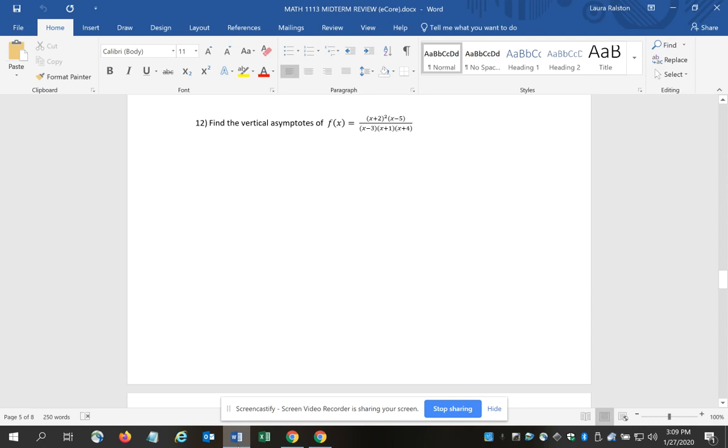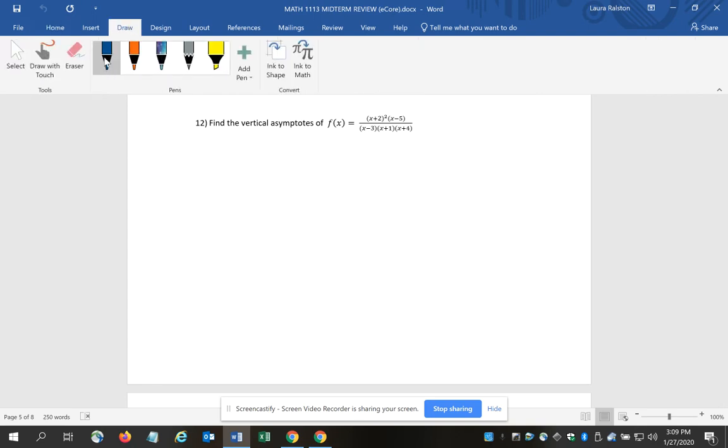We're picking up with question number 12 on the Pre-Calculus Midterm Review. The next few questions deal with rational functions – those are the functions that look like fractions. There's a question asking you to find the vertical asymptotes, one for y-intercepts, and one about horizontal asymptotes. This particular question asks about the vertical asymptotes.